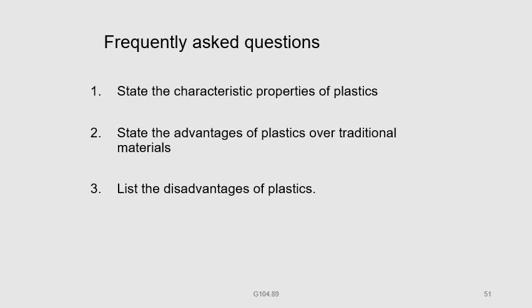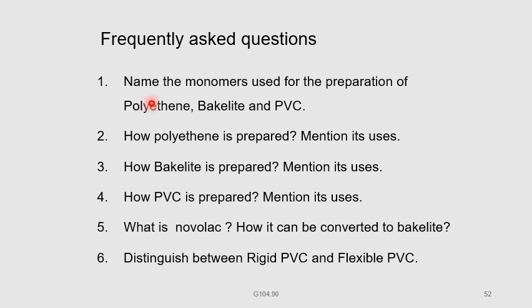Frequently asked exam questions include: State the characteristic properties of plastics. State the advantages of plastics over traditional materials. List the disadvantages of plastics. Name the monomers used for the preparation of polythene, bakelite, and PVC. How is polythene, bakelite, or PVC prepared — mention its uses. What is novolac? How can it be converted to bakelite? Distinguish between rigid PVC and flexible PVC.